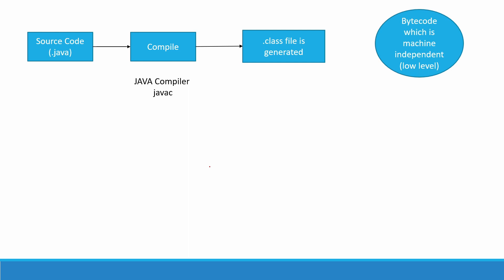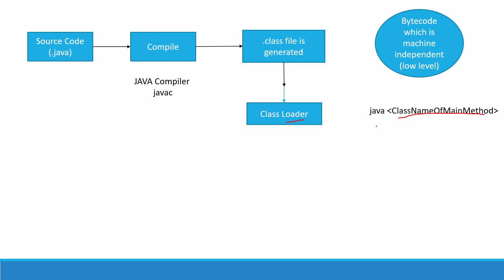The .class file is also called bytecode. Now that we have a .class file, the compilation step is done. Now we want to run the Java program to get our output. The first step to run a Java program is to give the .class file to the class loader. What does the class loader do? In a Java project there will be multiple classes. Whenever we execute a Java program, we write 'java' then space then the class name of the main method.